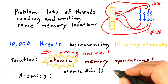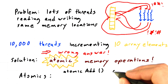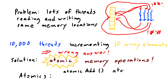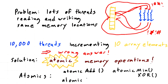There are a bunch of atomics. You can get the full list in the programming guide, but some examples you might use are atomic add, atomic min, atomic xor, and so forth. A particularly interesting one is called atomic CAS, which stands for compare and swap.